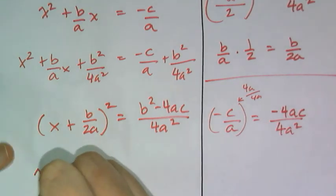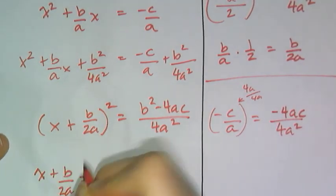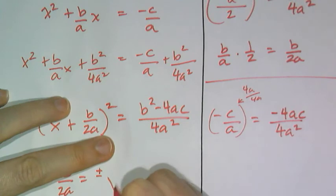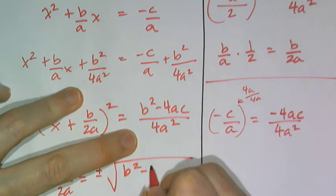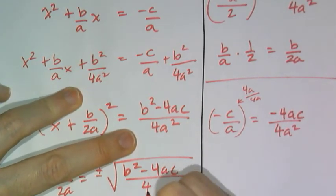So I get x plus b over 2a equals plus or minus the whole square root of b squared minus 4ac all over 4a squared.